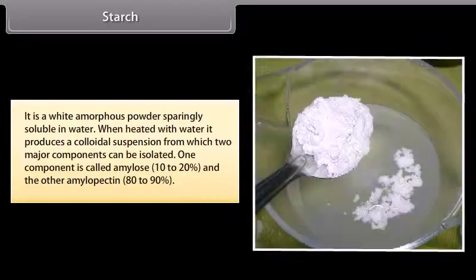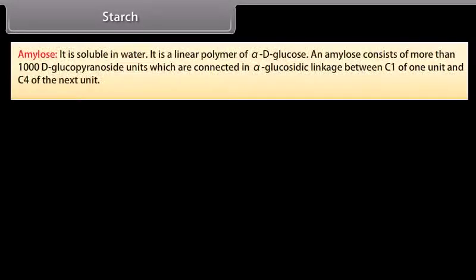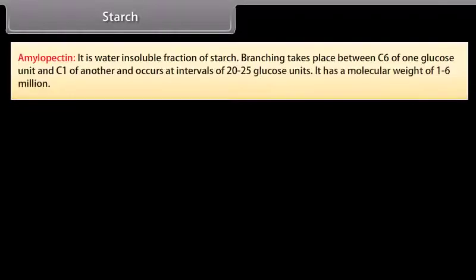Starch is a white amorphous powder, sparingly soluble in water. When heated with water, it produces a colloidal suspension from which two major components can be isolated: amylose and amylopectin. Amylose is soluble in water and is a linear polymer of alpha-D-glucose, consisting of more than 1000 D-glucopyranose units connected by alpha-glucosidic linkage between C1 and C4. Amylopectin is the water-soluble fraction of starch; branching takes place between C6 of one glucose unit and C1 of another, occurring at intervals of 20 to 25 glucose units, with a molecular weight of 1 to 6 million.